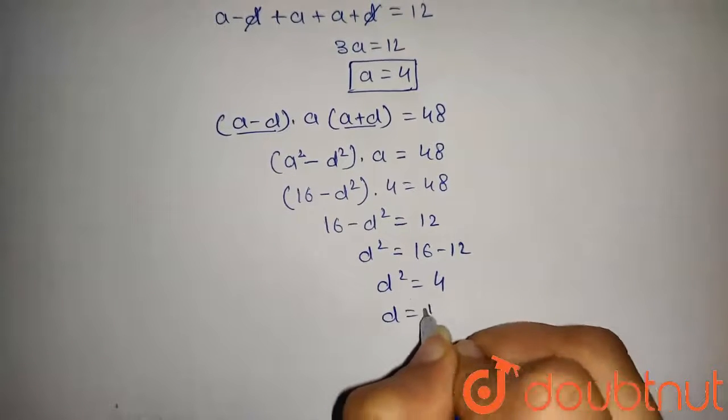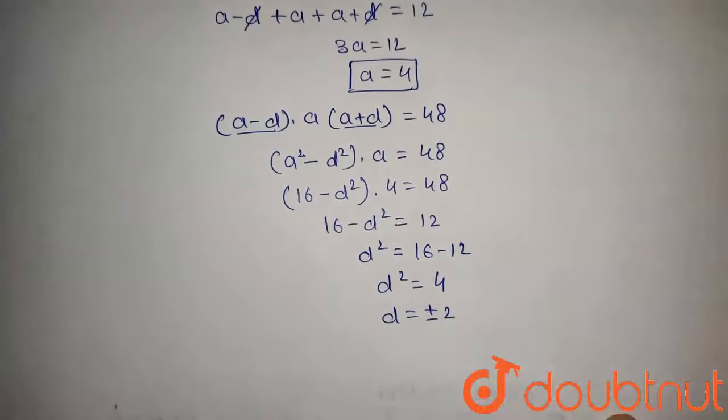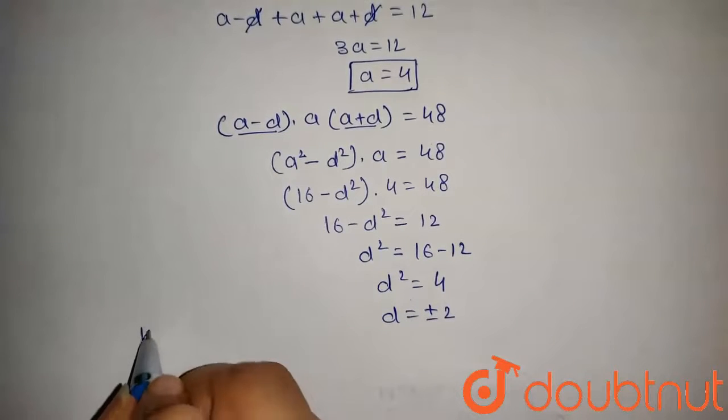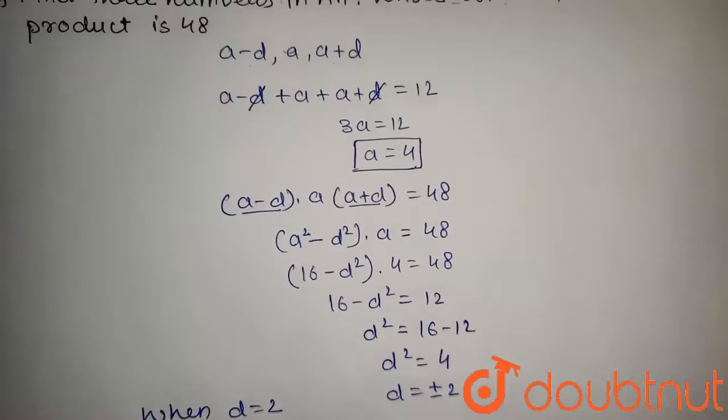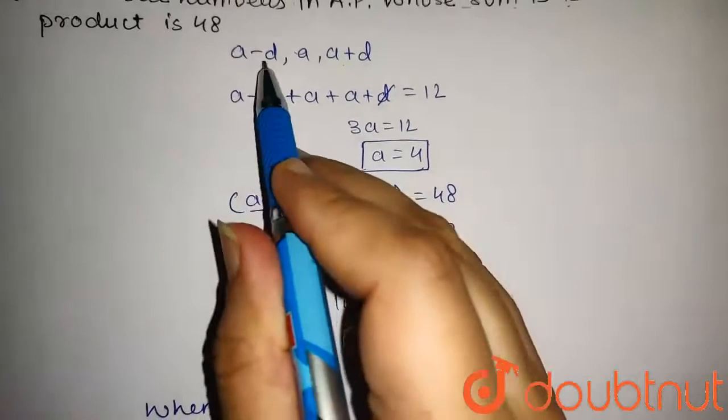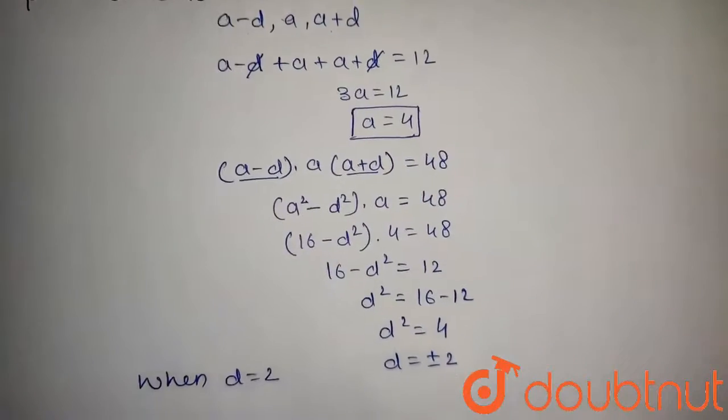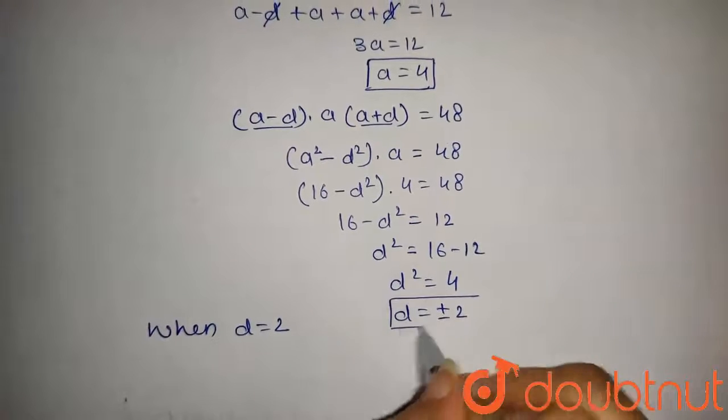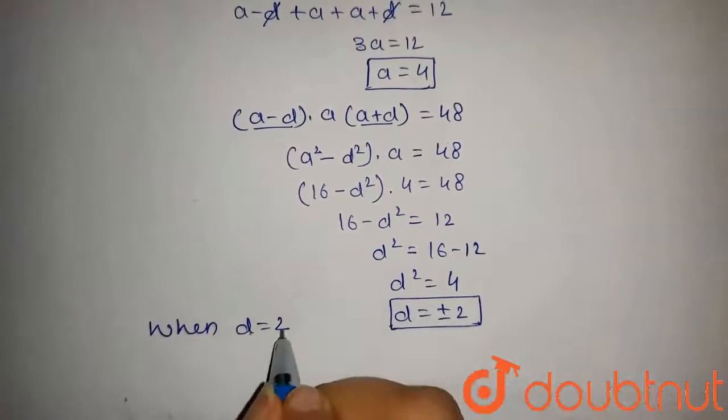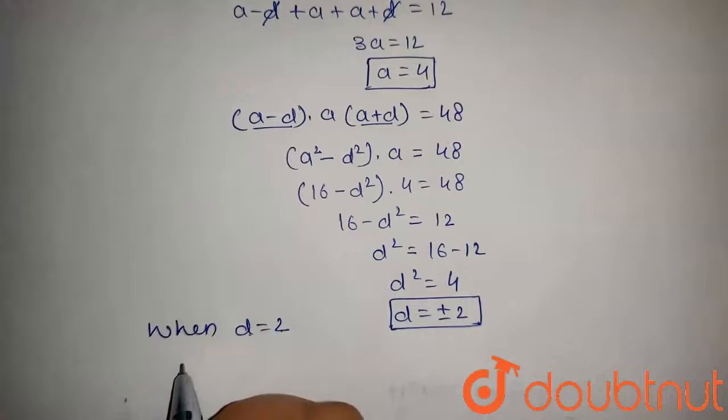On taking square root both sides, we get d equals plus minus 2. Now when we take d equals 2, the numbers are a minus d, a, and a plus d. So with a equals 4 and d equals 2, we get a minus d, that is 4 minus 2 equals 2.